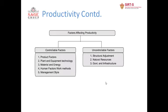Product factors — what product to make, how it can be made, and what its features are — can be controlled easily. Plant and equipment technology also falls under controllable factors, as you can use newer versions of machines or newer technology to enhance productivity.